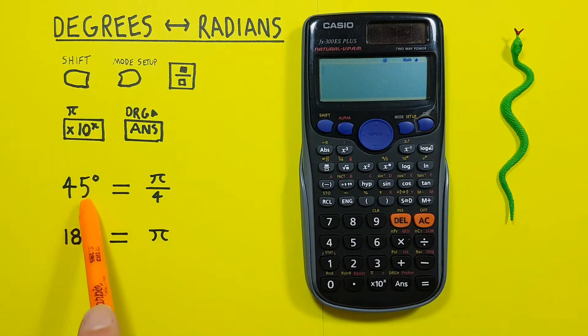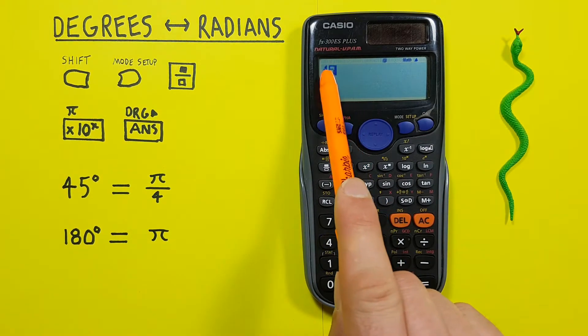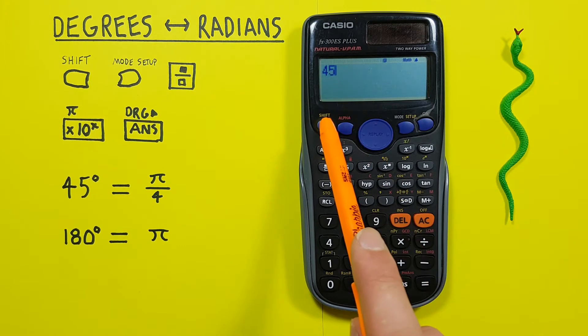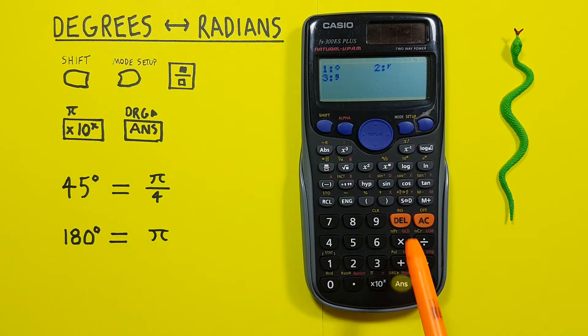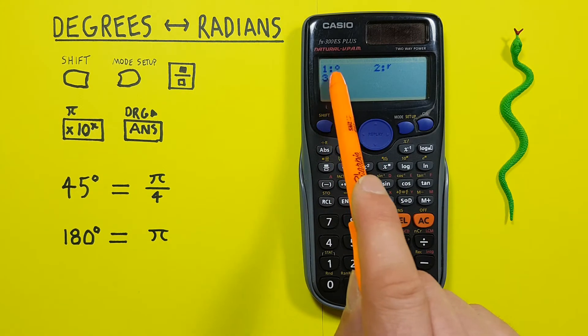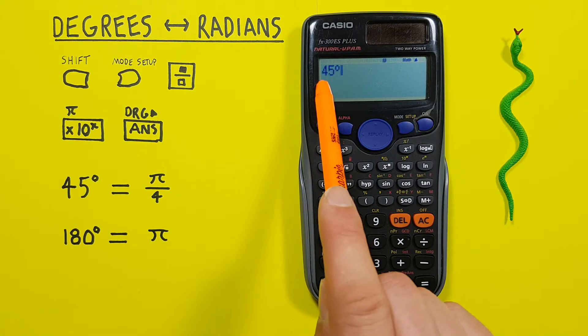Next, we enter our degrees, so 45. And now we tell our calculator these are degrees. To do that, we press the Shift A and S key. That brings us to here. And we select number 1, the degree symbol. There we go, we now have 45 degrees.